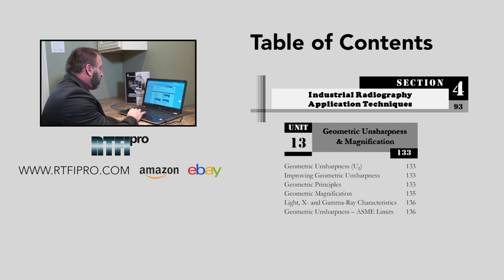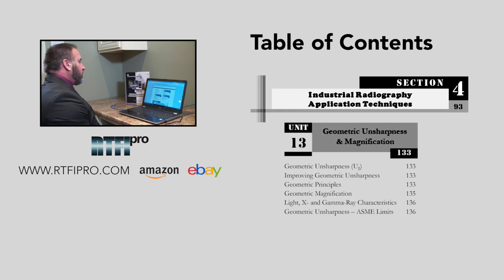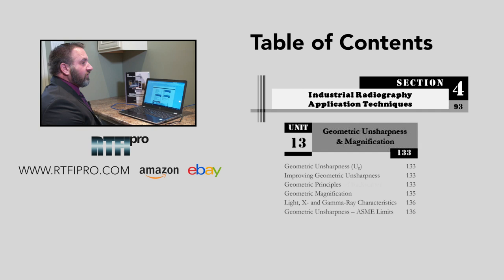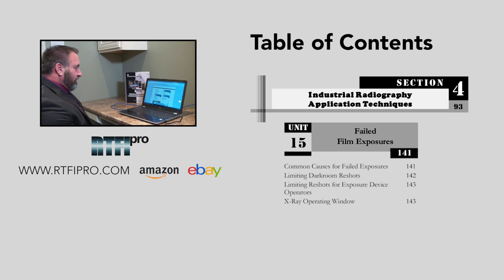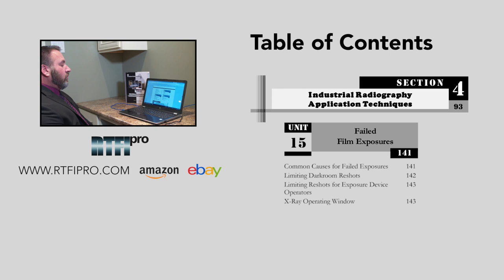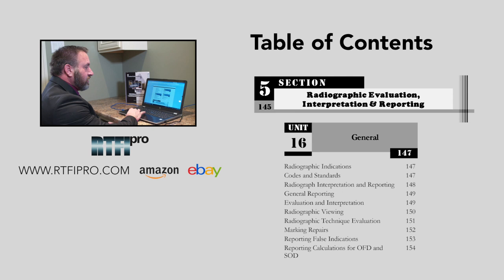Unit thirteen covers geometric unsharpness and magnification: geometric unsharpness, improving geometric unsharpness, geometric principles, geometric magnification, light X and gamma ray characteristics, and geometric unsharpness with ASME limits. Unit fourteen addresses scattered radiation and decay: scattered radiation, lead screens, and detection and analysis of back scatter. Unit fifteen covers failed film exposures — common causes for failed exposures, limiting dark room reshoots, limiting reshots for exposure device operators, and the X-ray operating window.